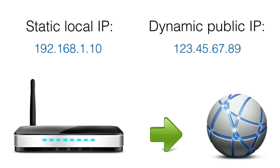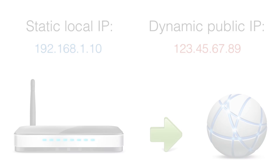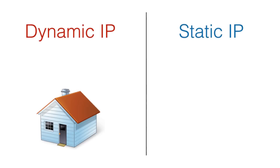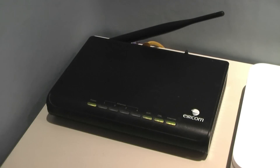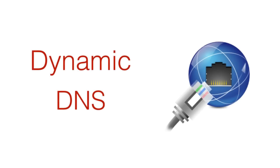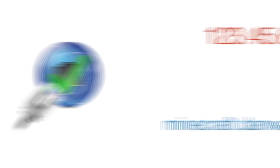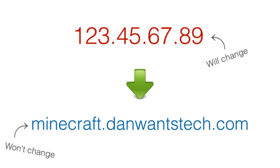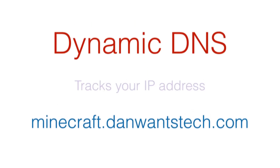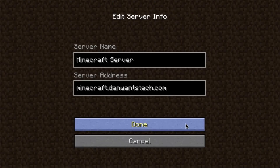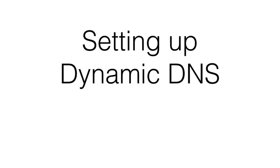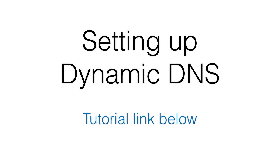There is one problem with these public IP addresses — they are usually also dynamic. Most home users are only permitted to have dynamic ones, with static addresses reserved for large companies and customers willing to pay a hefty fee. Provided you leave your router switched on, it will change at least once per week. What you need to set up to combat this is something called Dynamic DNS. You'll be given a URL to use instead of a numeric IP address, and that will always point to your Minecraft server no matter how often your IP address changes, because the purpose of Dynamic DNS is to track those changes.